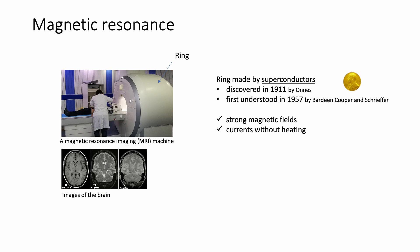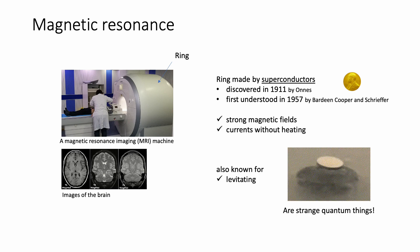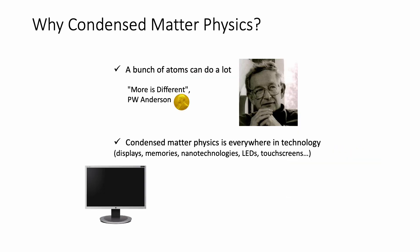They do all sorts of strange things, including levitating. The catch is that they need to be cooled down a lot to maintain these properties, usually using liquid nitrogen or helium that generates the fog that you see here. For this reason, they can't be used in many other applications. Well, unless we discover new superconductors that work at higher temperatures. I hope I've convinced you that a bunch of atoms can do a lot.